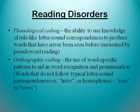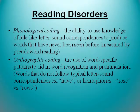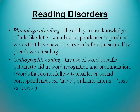Phonological coding is the ability to use knowledge of rule-like letter-sound correspondence to produce words that have never been seen before — on tests like the WRAT, we look at word reading and whether they can sound out words. Orthographic coding is the use of word-specific patterns to aid in word recognition and pronunciation for words that do not follow typical letter-sound rules. On the WIAT, there's a subtest with non-word reading using made-up words to measure how well someone can sound out unfamiliar words.